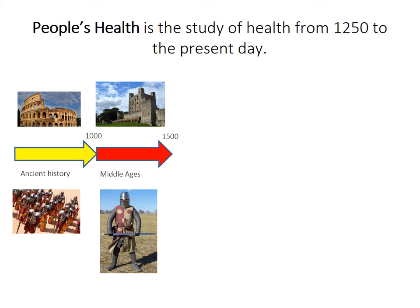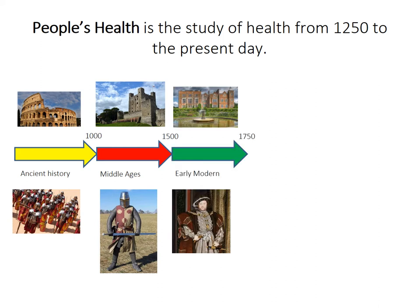The Middle Ages, also known as the medieval period, is the first period we will look at in people's health. The next period is the early modern period, which runs from the year 1500 to the year 1750. This is the time of the Tudor monarchs, the start of things like the slave trade, and the start of towns in England.